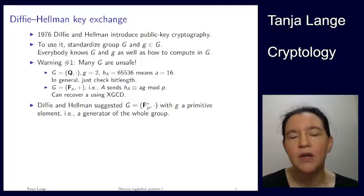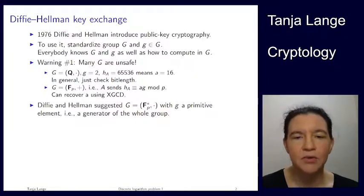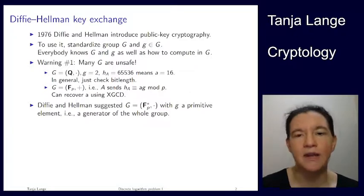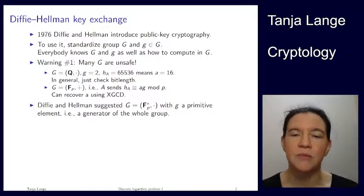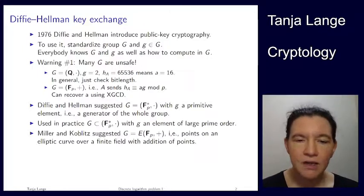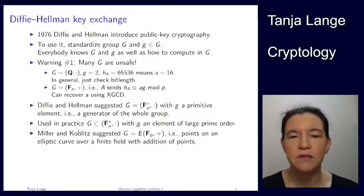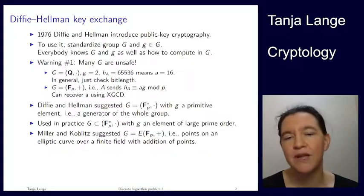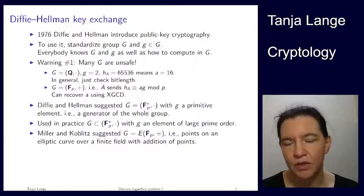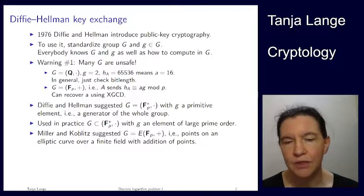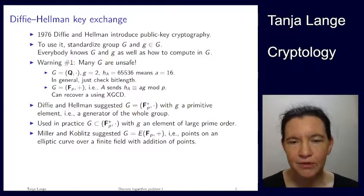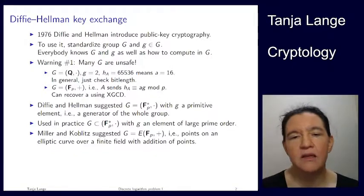What Diffie-Hellman suggested in their paper was to use finite fields — the multiplicative group. So it's G to the power A for your public key, and G should be a generator of the whole group, meaning G should have order P minus one. What we're doing currently in practice — and we'll get to the reasons next week — is that we need G to have a large prime order. We don't actually want the whole group order; we want a part of it that has a large prime order. The order is P minus one, and since P is a large prime, P minus one is even, so there's definitely a factor of two, and there might be many more factors.